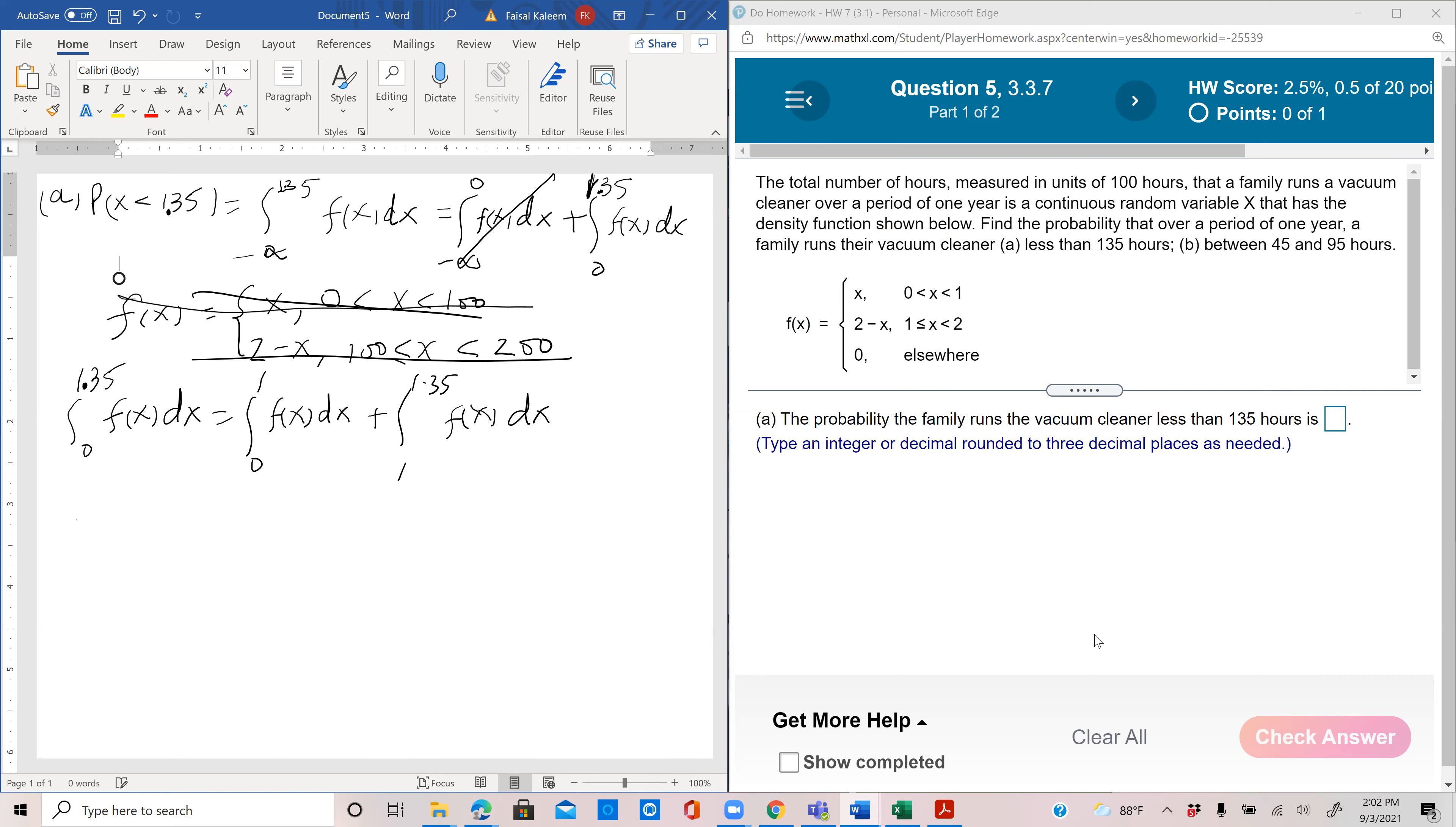Between 0 and 1 the function is x, and between 1 and 1.35 it's 2 minus x. So this would be x squared by 2, and the integral here would be 2x minus x squared by 2.